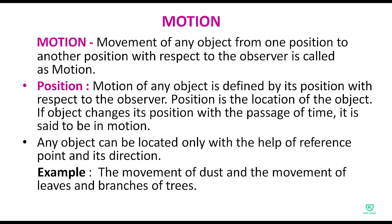Motion ki simple definition ki baat kare toh motion kya hota hai — it is the movement of any object from one position to another position with respect to the observer. Motion ka matlab hota hai koi bhi cheez agar move kar rahi hai, agar movement show kar rahi hai, toh hum keh sakte hain ke haa, motion ho raha hai.